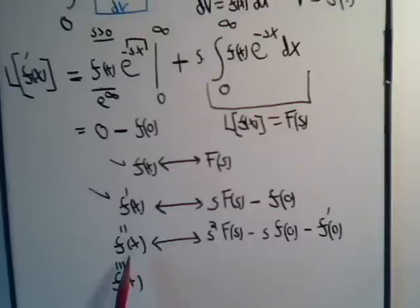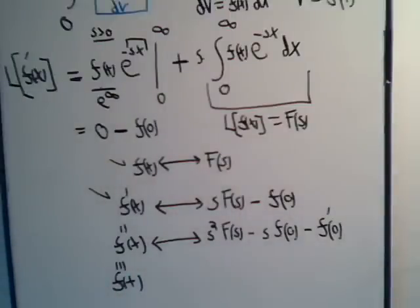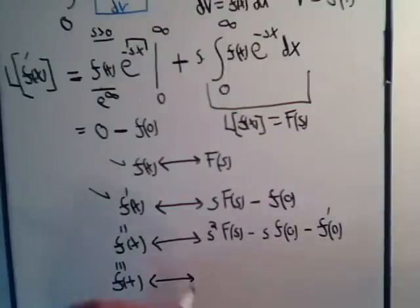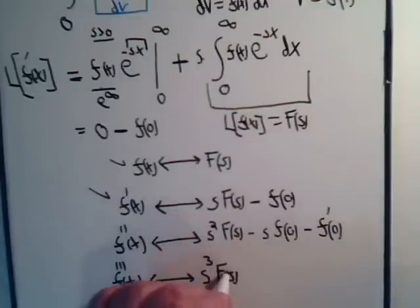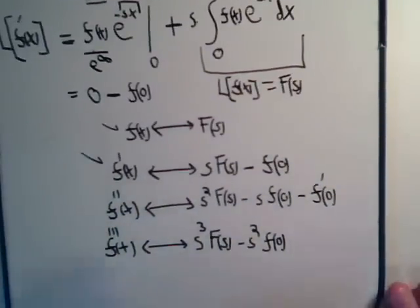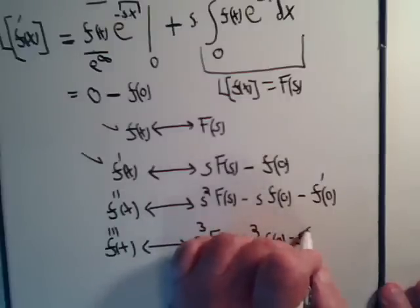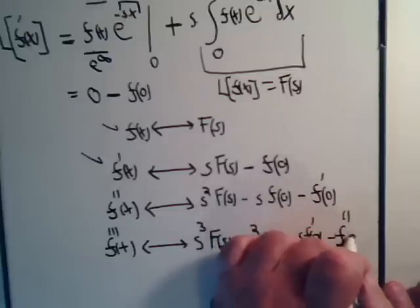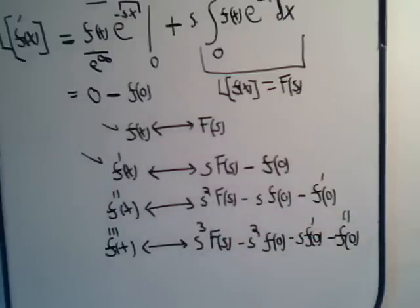Furthermore, hopefully you can see there's a pattern. For the third derivative, this is going to come out to be equal to s cubed times F of s, minus s squared times f of zero, minus s times f prime of zero, minus f double prime of zero. For the third derivative, you can see the pattern just keeps on going like this.